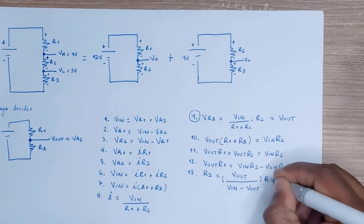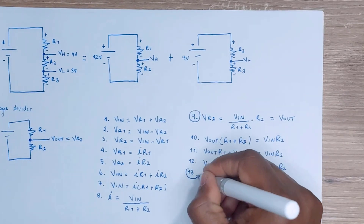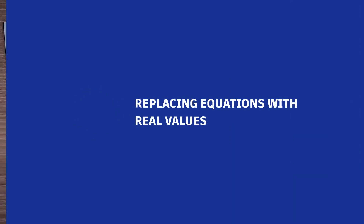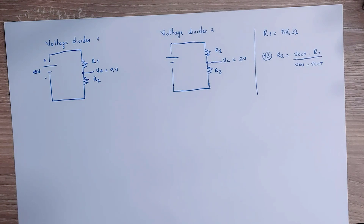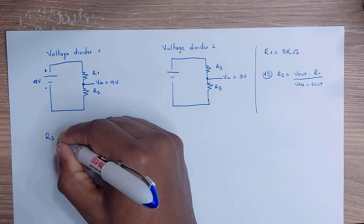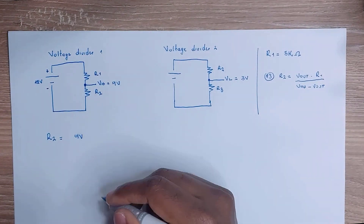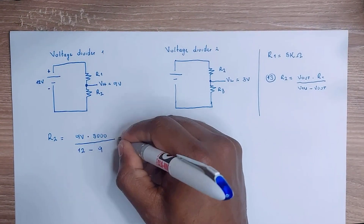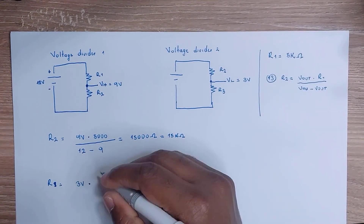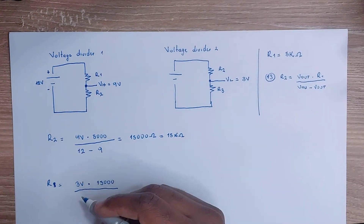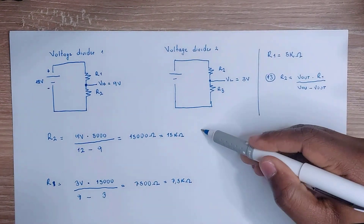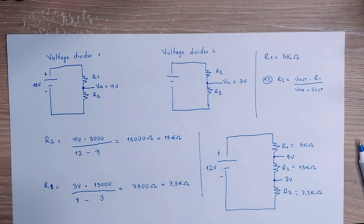I have the equation for resistor 2. I'm going to replace the values for the voltage divider networks we need to design. For the VH voltage divider, I want VH to be 9 volts. Using a 5K ohm resistor as R1, I need to find R2 that gives 9 volts as output — that's a 15K ohm resistor. For the VL voltage divider, R2 is 15K ohm. We need to find R3 that gives 3 volts as output — we'll need a 7.5K ohm resistor. Our work is done.